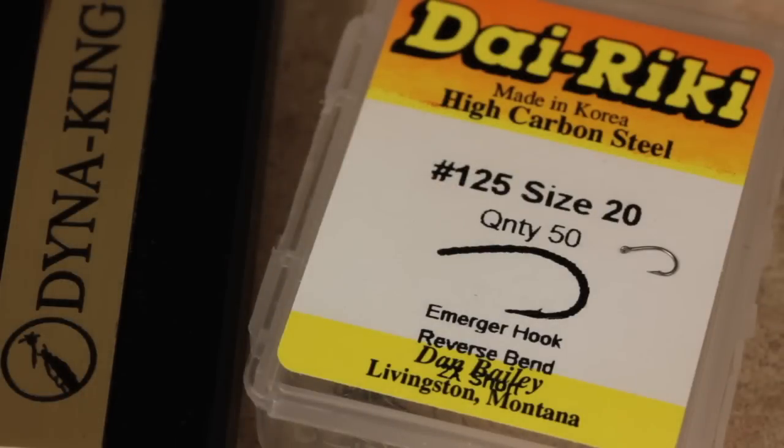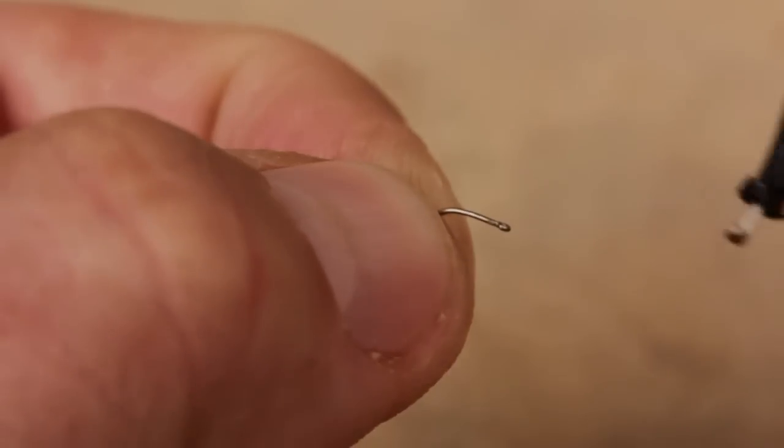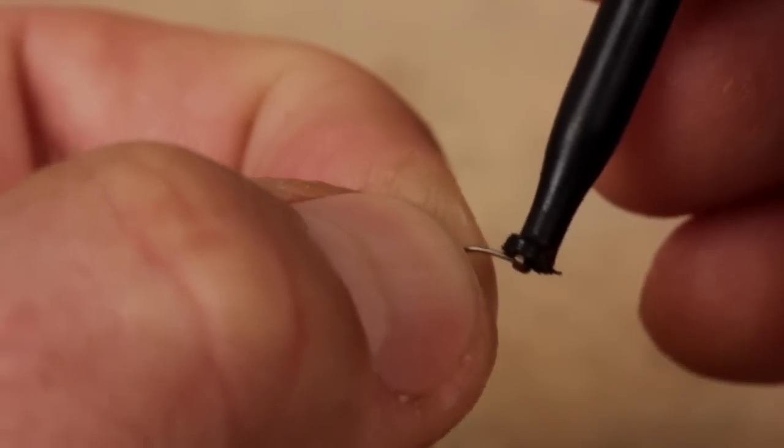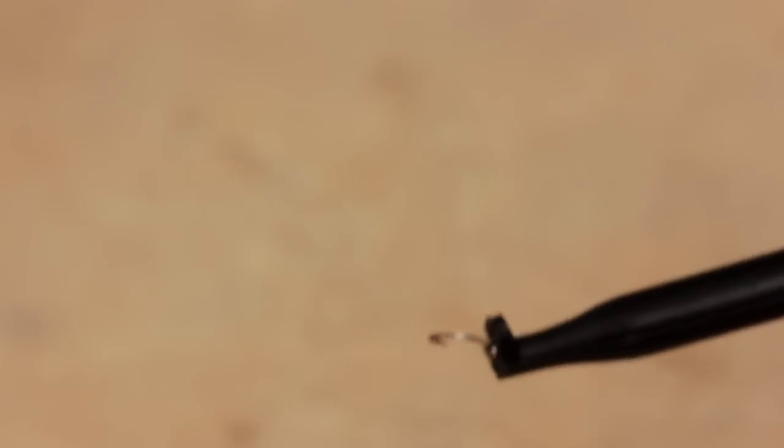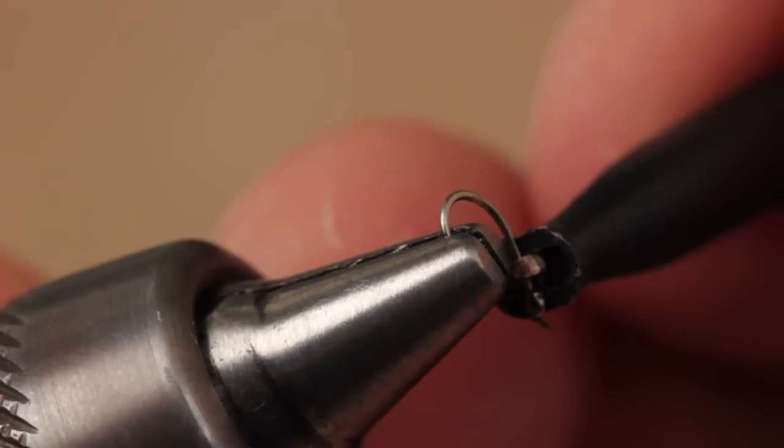A Dairiki No. 125 Emerger hook in a size 20 is a great choice for this fly. With small hooks like this, I've found easy hackle pliers to be almost indispensable. Once you get a hold of the hook, it's much easier to manipulate than it is with just your fingers.